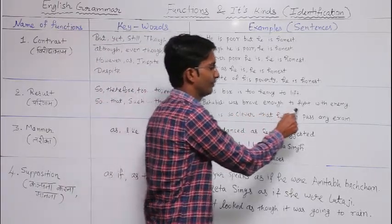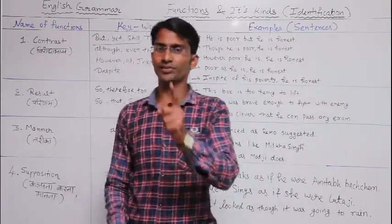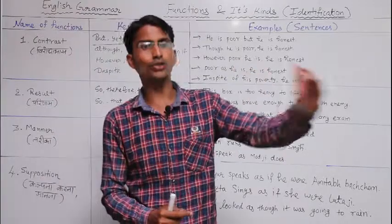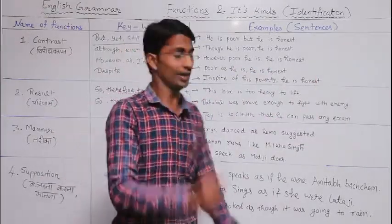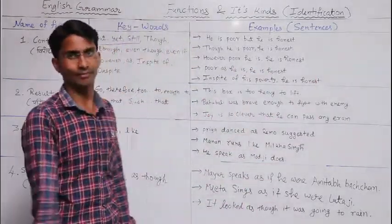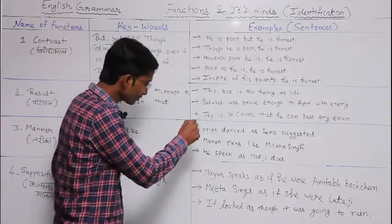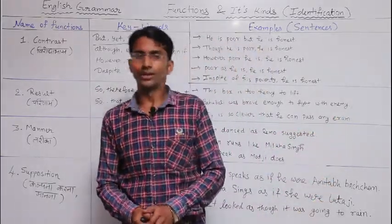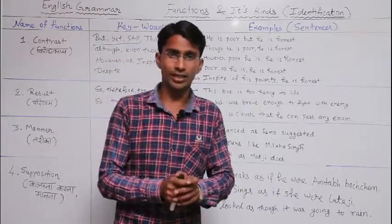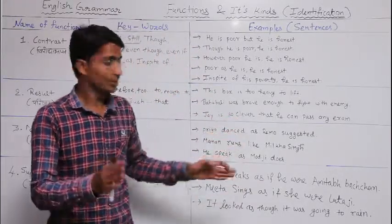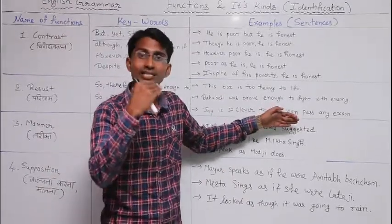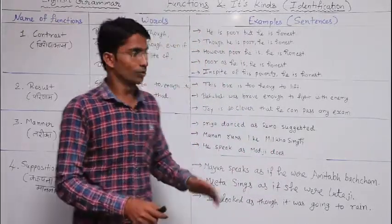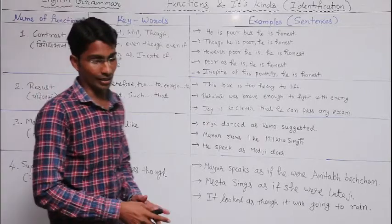'Bahubali was brave enough to fight with the enemy' — meaning Bahubali was very brave, capable of fighting his enemies. Next: 'Jay is so clever that he can pass any exam' — Jay is so smart that he can pass any exam. Here we used 'so that.' This completes our second function: result.